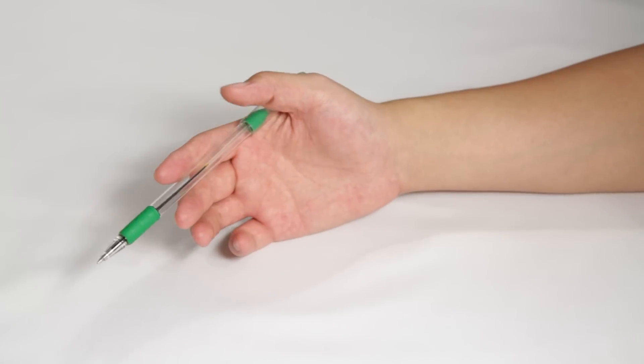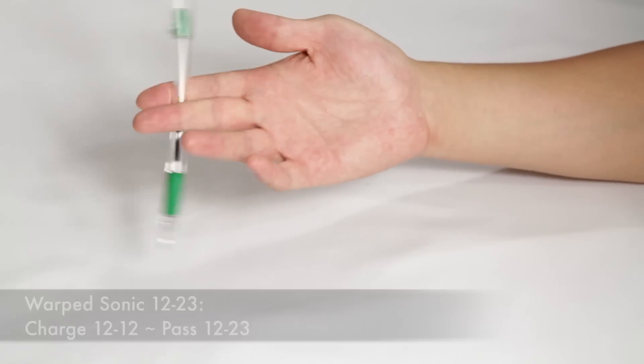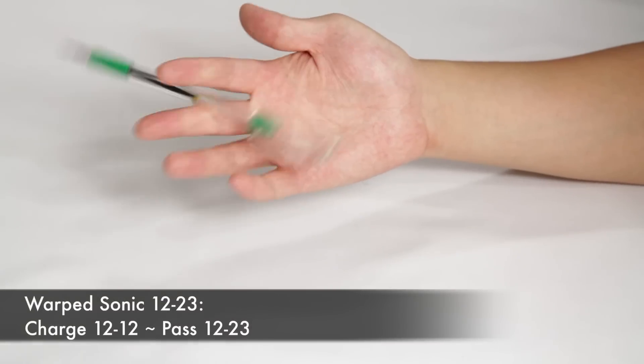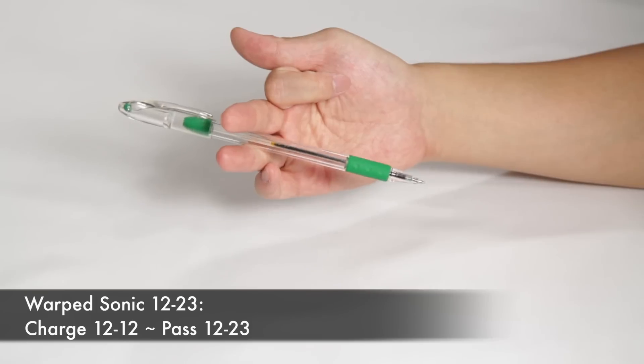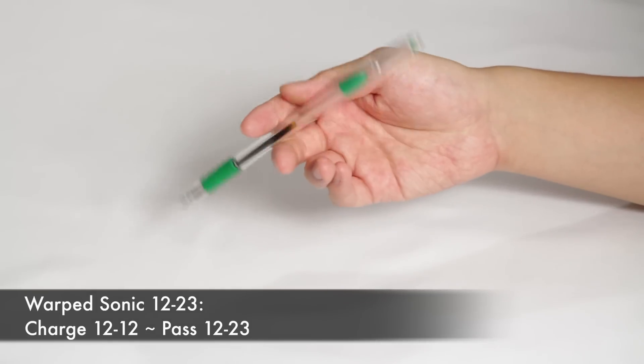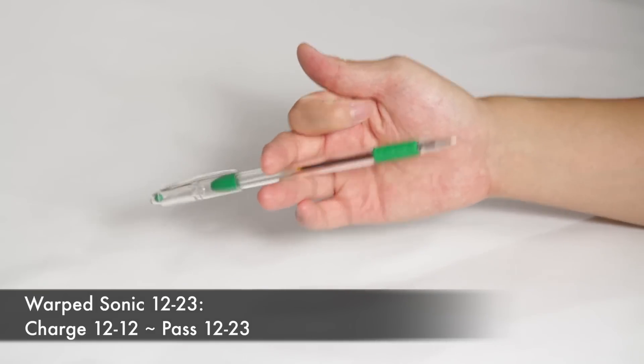Formally written out, it is a charge 1-2 to 1-2, interrupted by a pass. So like that, again, interrupted by a pass.